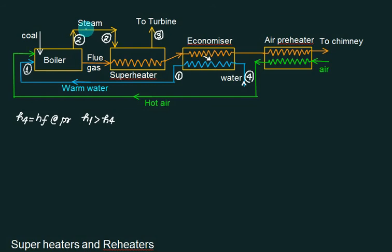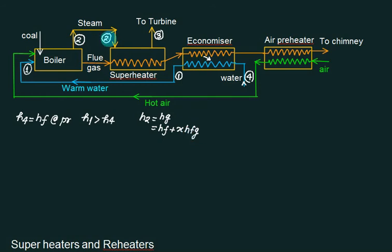Point 2 is the exit condition. H2 can be equal to either HG (when dry saturated) or HF plus X·HFG (when wet). Point 3 is superheated. For superheated steam, both pressure and temperature are provided, and you can collect this data directly from the superheated steam table.